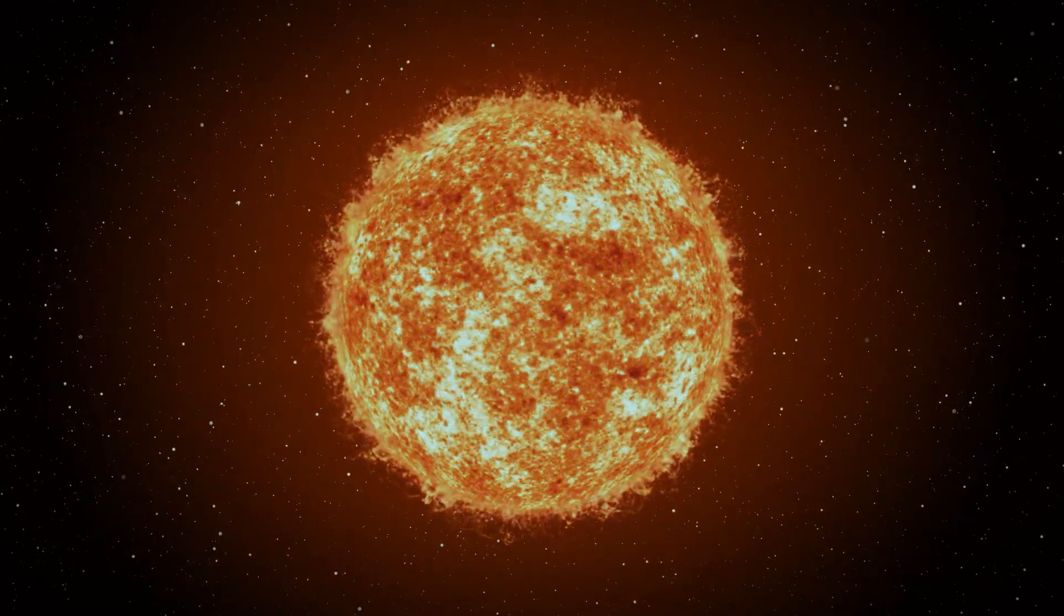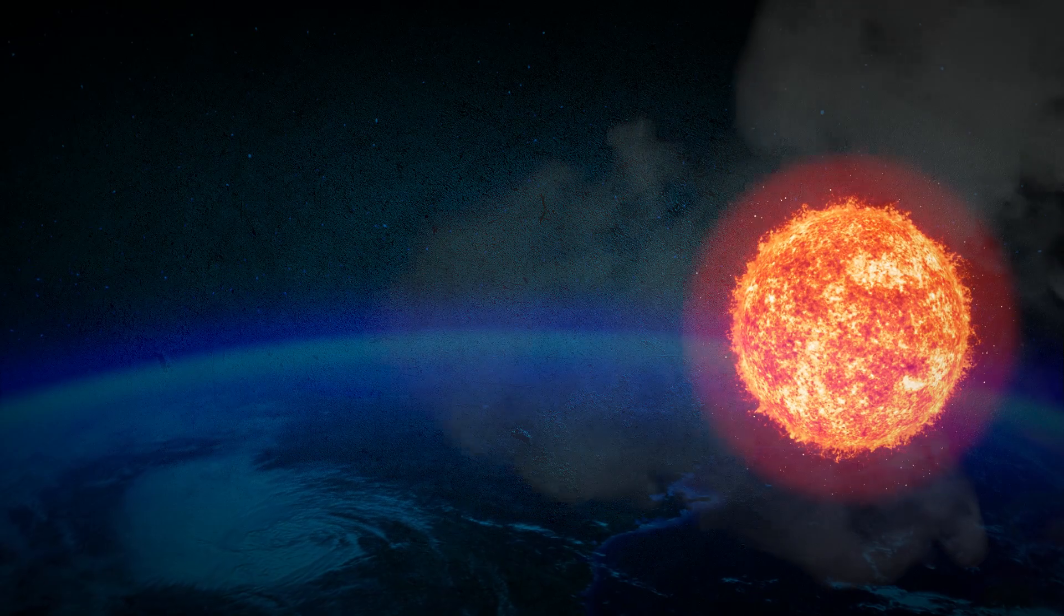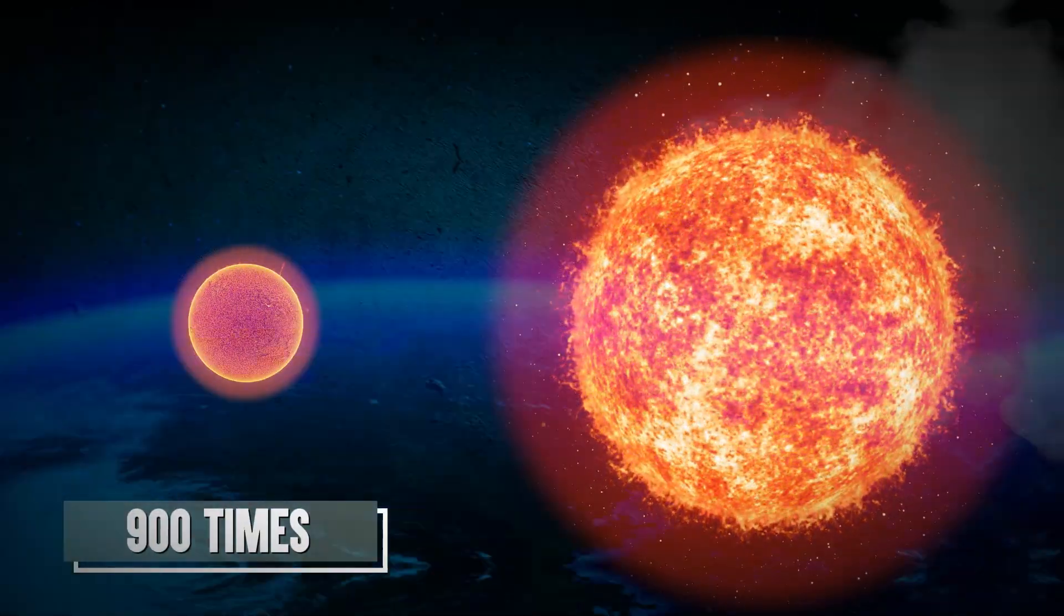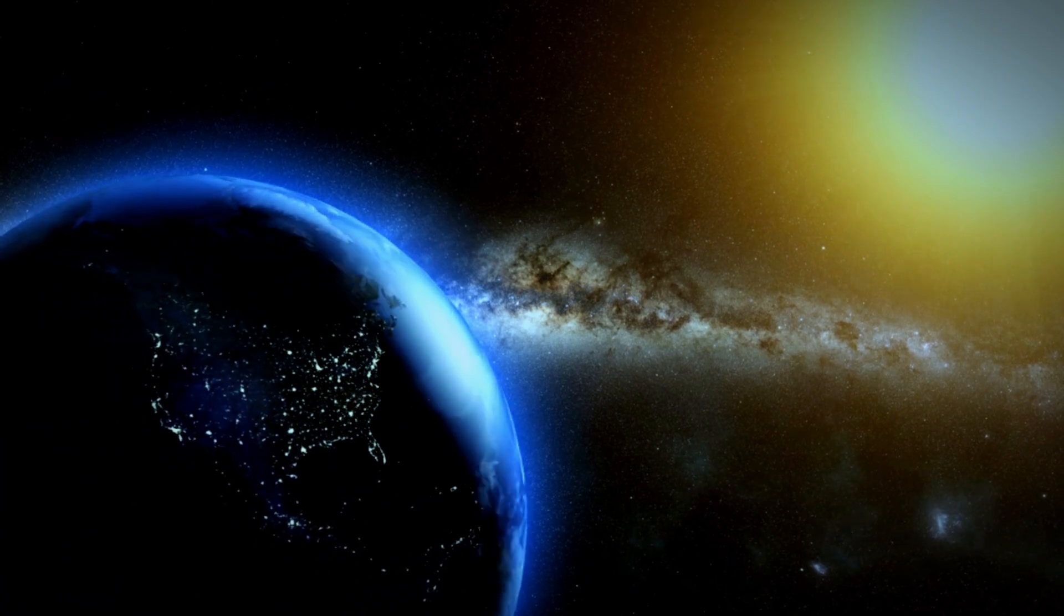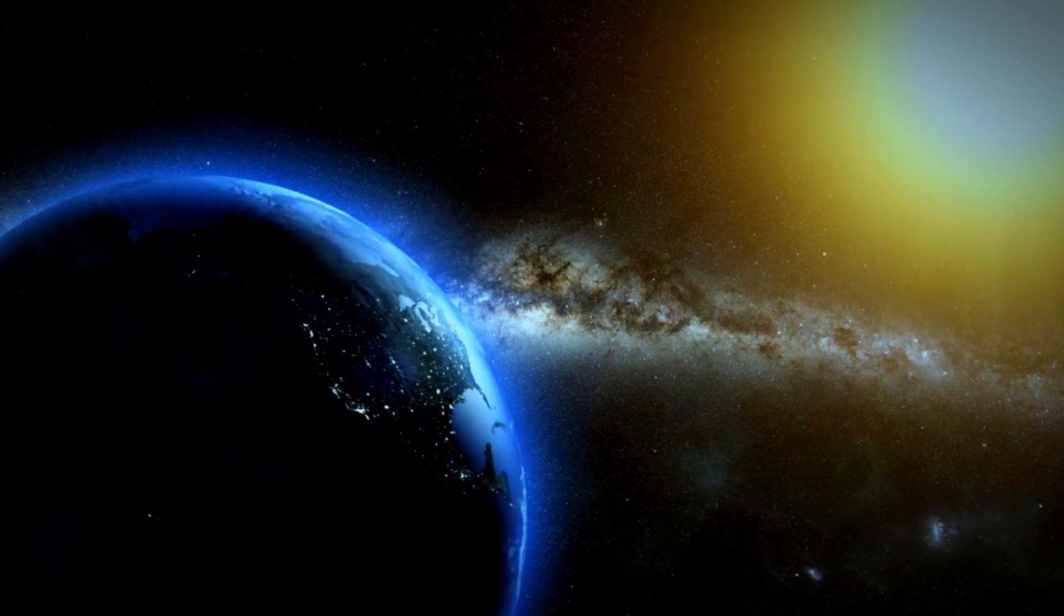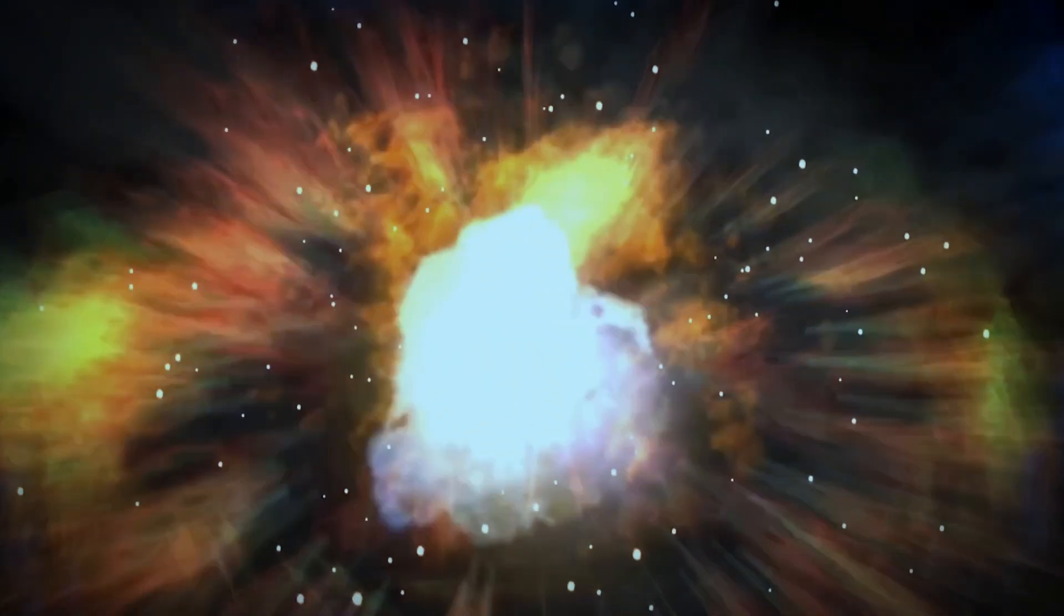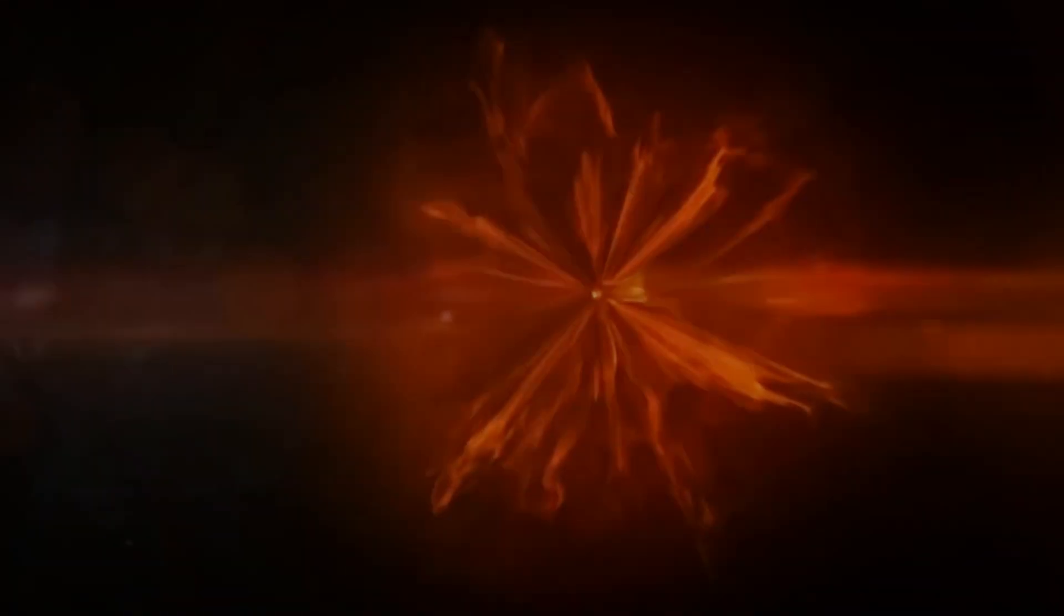Betelgeuse isn't your average star. It's a cosmic behemoth, a colossal giant with a diameter 900 times that of our sun. If it sat at the center of our solar system, its outer surface would stretch beyond Jupiter's orbit. These massive stars live fast and die explosively, often going out in a blaze of glory called a supernova.